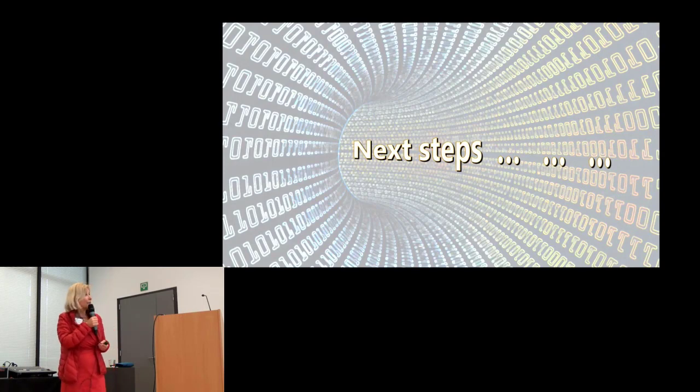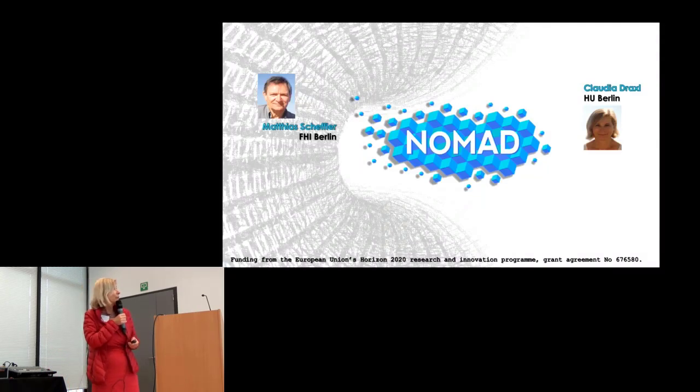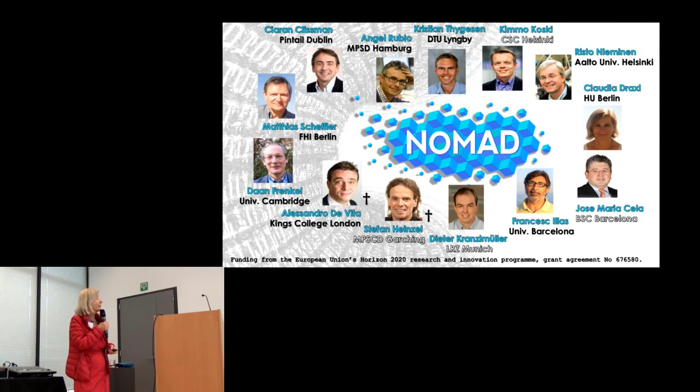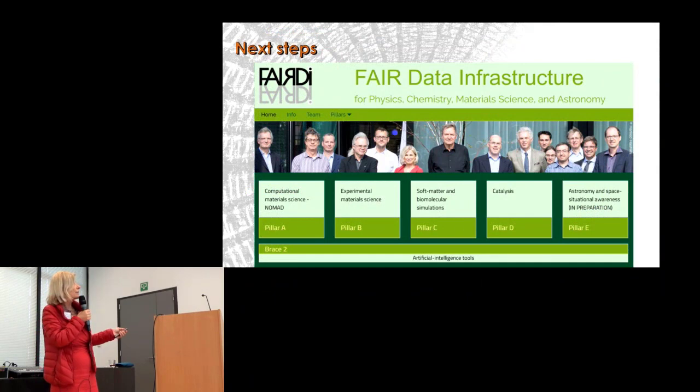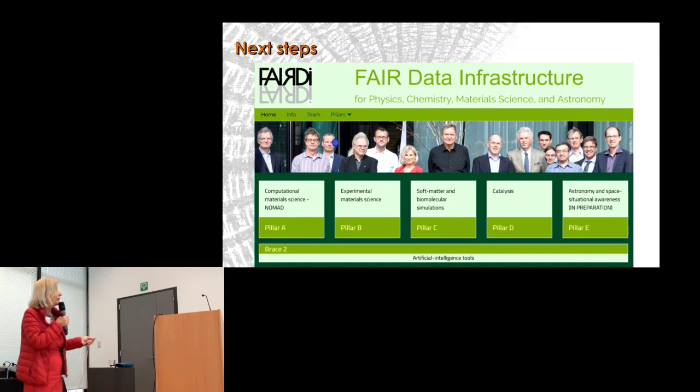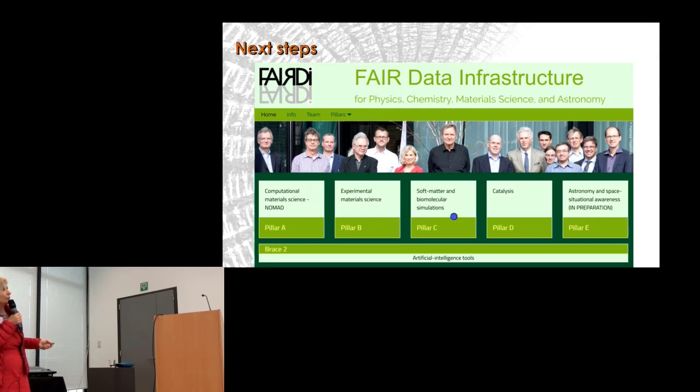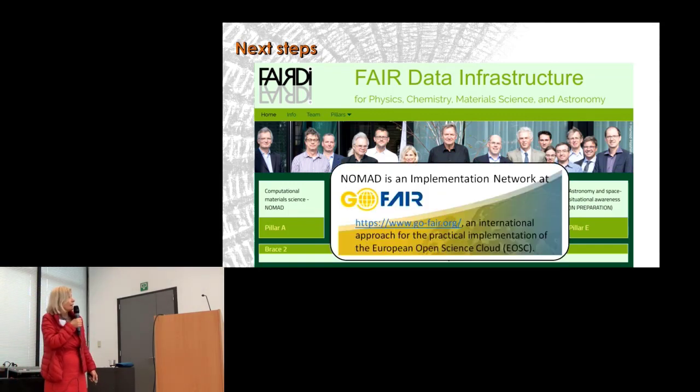My time is nearly up. Let me talk about the next steps. NOMAD started as a bilateral project, a common database. It evolved into a European-wide and even worldwide initiative. Now NOMAD is hosted by an association: Fair Data Infrastructure for Physics, Chemistry, Material Science, and Astronomy. Computational materials science, particularly NOMAD, is part of this. We're expanding towards soft matter, experimental science, catalysis, and other topics. I'd also like to mention that NOMAD is an implementation network of the GoFair initiative of the European Open Science Cloud.